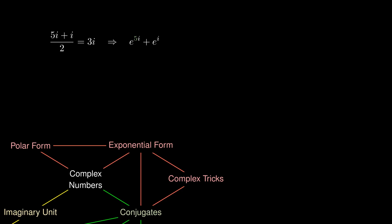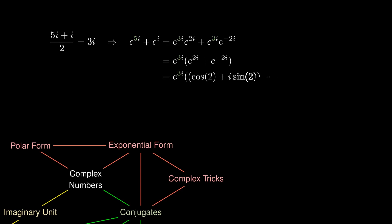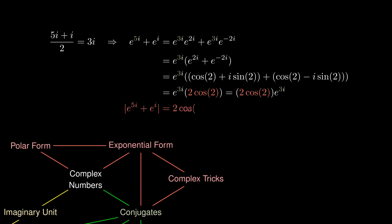We factor e^(3i) from both expressions to get e^(3i)(e^(2i) + e^(-2i)). Expressing e^(2i) and e^(-2i) using Euler's identity and simplifying gives e^(3i)·2cos(2). Therefore, e^(5i) + e^(i) has modulus 2cos(2) and argument 3.